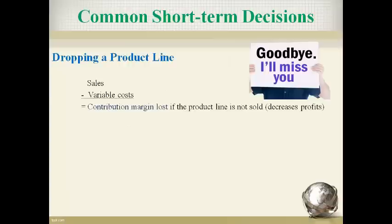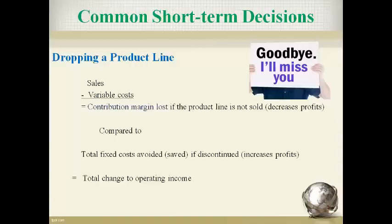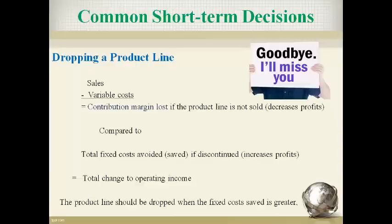Dropping a product line will change sales, as sales of the product will not occur in the future. Always use the contribution margin income statement format when sales change. Less sales will also result in less contribution margin, so compute the contribution margin from this product line only. Variable costs will include variable product costs and all variable selling costs related to the product line. Net the contribution margin lost with the amount of fixed costs that will be saved if the product line is not sold — fixed costs saved must be directly related to this product line only. Ignore all other fixed costs that will continue when the product line is dropped. If fixed costs saved are greater than contribution margin lost, the product line is normally dropped.